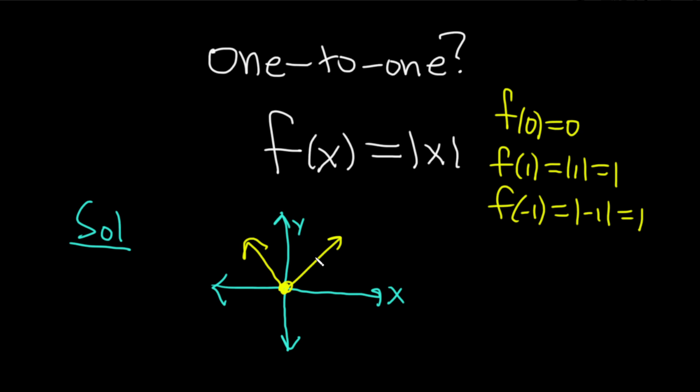This gives you three ordered pairs: 0 comma 0, that comes from this one. And then 1 comma 1, that's going to be here. And then negative 1 comma 1, that's going to be over here. So this is negative 1 and 1 and 1. And these would be our three ordered pairs coming from these equations here.